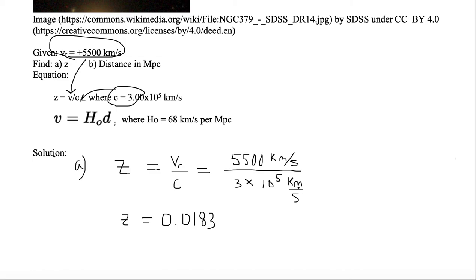Now we have units that drop out. Let's go ahead and do it now in our equation. Kilometers per second drops out with kilometers per second, and so z is actually a unitless number. The redshift parameter z for this particular galaxy is 0.0183.